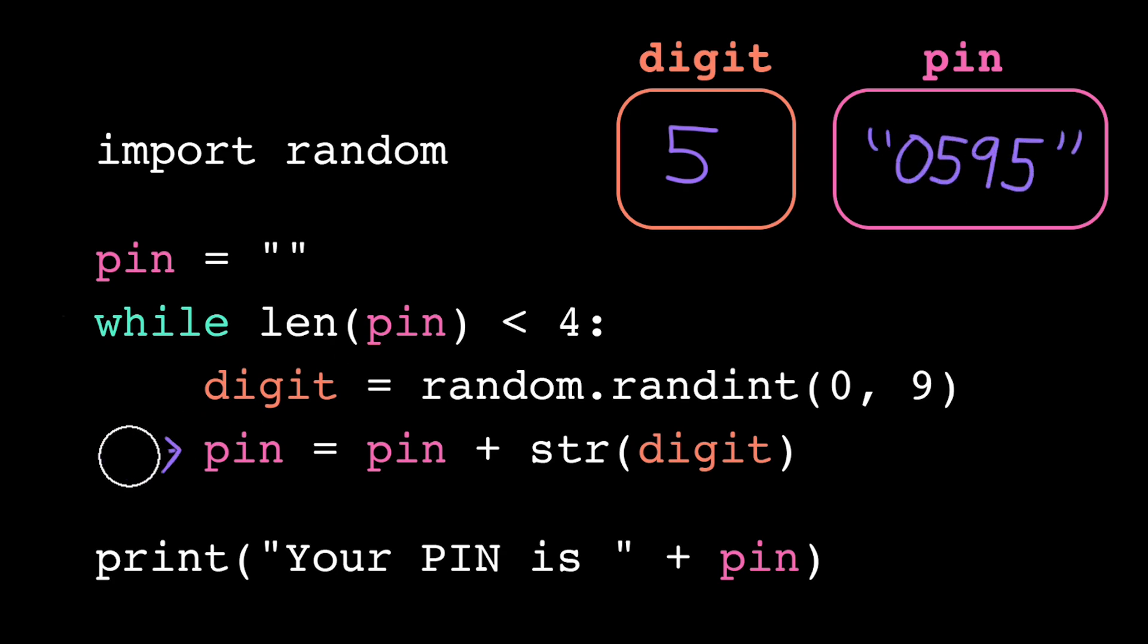Once again, we find ourselves at the bottom of the loop, so we jump back to the top. We substitute in the current value of pin, which has length 4. So now our loop condition is is 4 less than 4, which evaluates to false. That means it's finally time to terminate the loop.